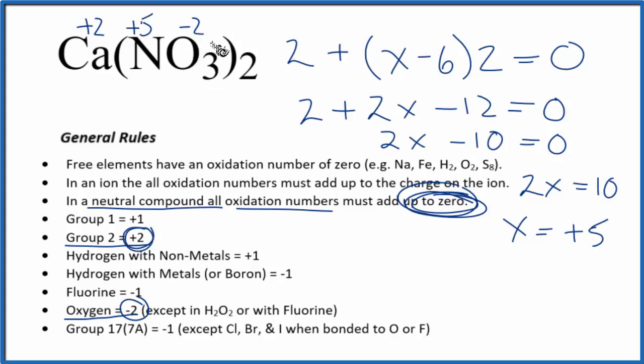The other way to do this is to look at this nitrate ion, this NO3, which is NO3 minus. We have two of them, you have 2 minus, it balances out the 2 plus. And you can find the oxidation states for each element here, knowing that all of the oxidation numbers will equal the charge here, this 1 minus.